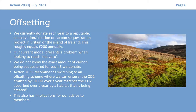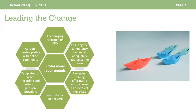The group also looked at offsetting. Currently we donate roughly £200 annually to a reputable conservation project in Britain or the island of Ireland — we've been doing this for about four years. However, our current model presents a problem for reaching net zero because we don't know the exact carbon being sequestered per pound donated. Action 2030 has recommended switching to an accredited offsetting scheme where CO2 emitted by SAEIM matches CO2 absorbed by a habitat being created.